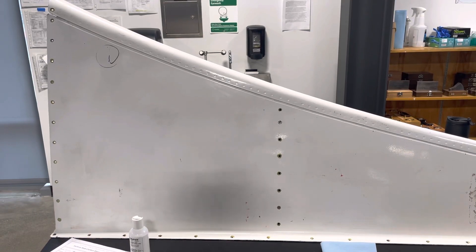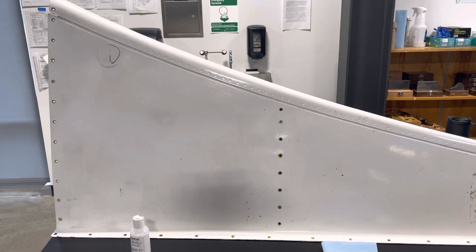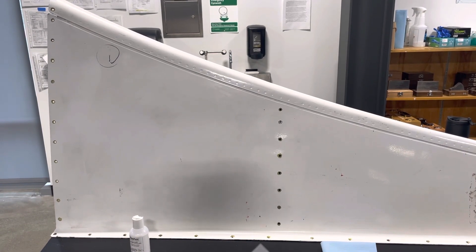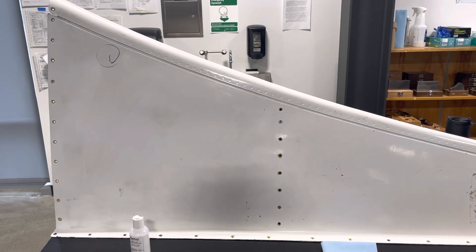All right, doing this inspection on this part here, vertical stabilizer, and we are checking around the holes for delamination and thickness. Using Olympus Epic 650.